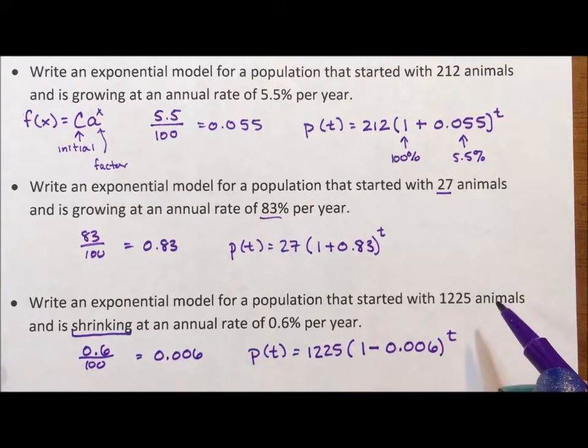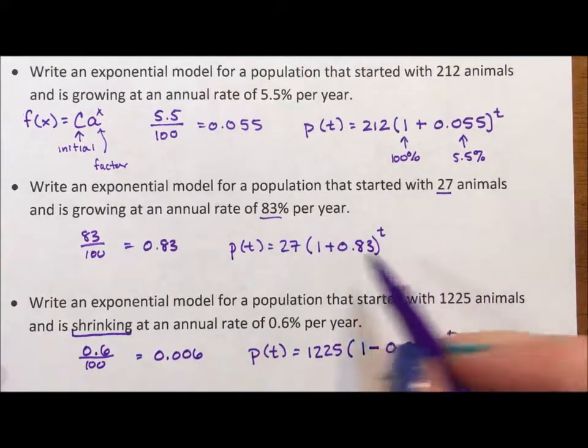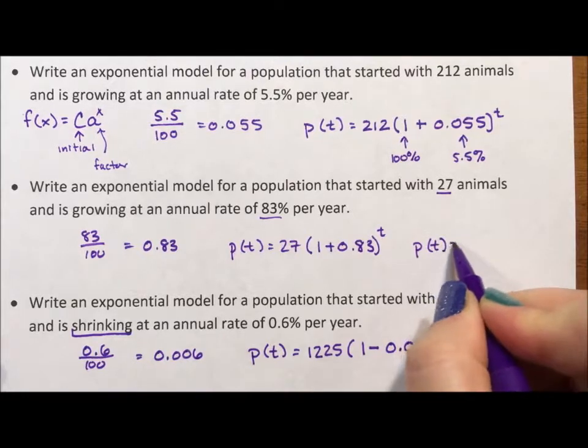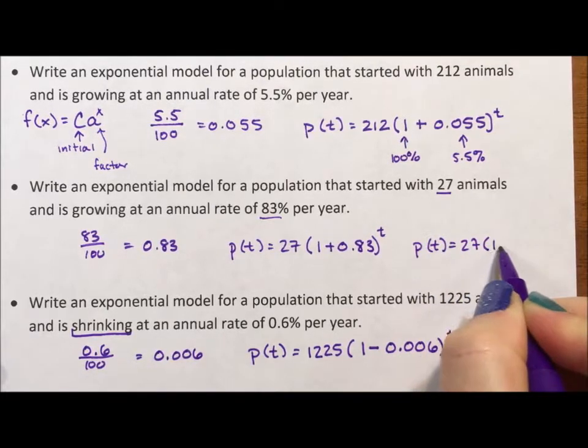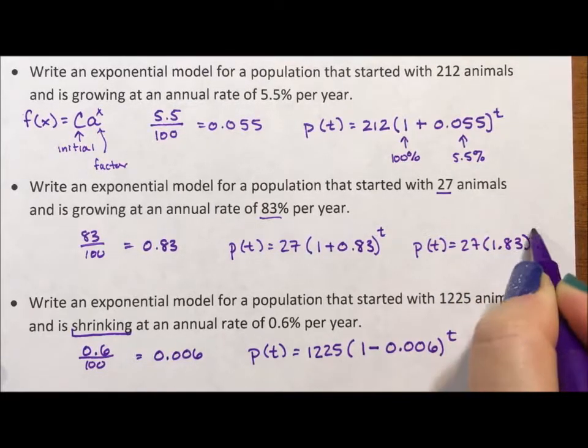Now, a few questions I commonly get. The first is, could I rewrite this as instead p(t) = 27 times 1.83 to the t? And the answer is, of course, you can do this addition or subtraction.